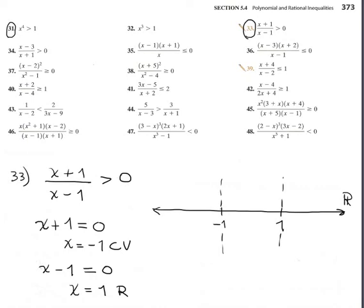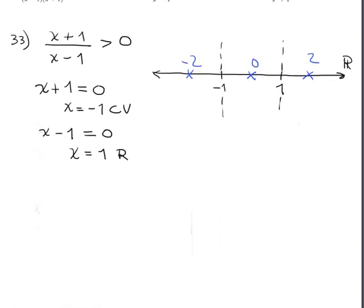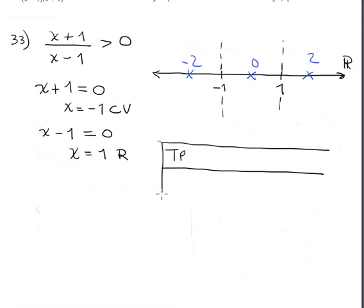We select testing points as always: negative two, zero, and positive two. We use these for the sign chart, analyzing the factors (x + 1) for the numerator, the denominator, and the total sign.